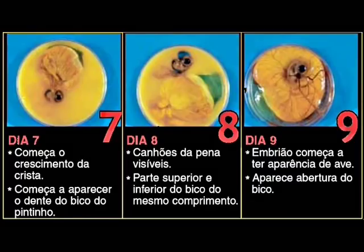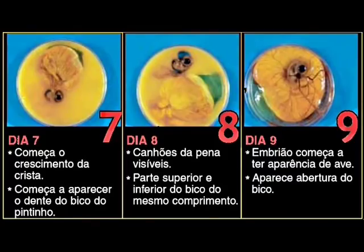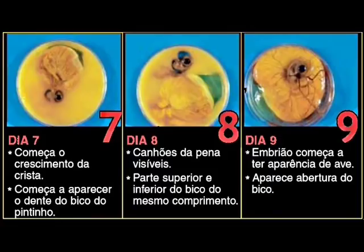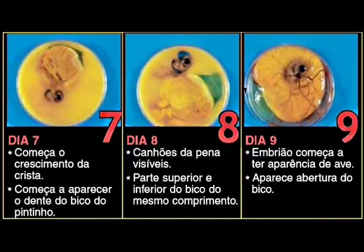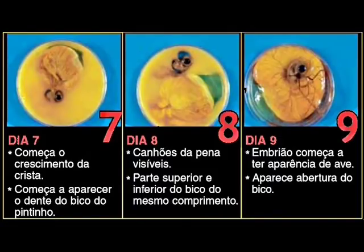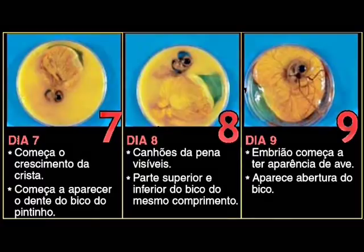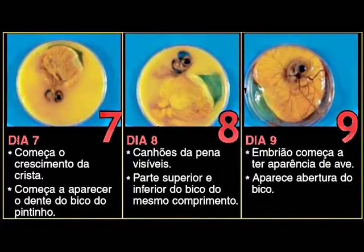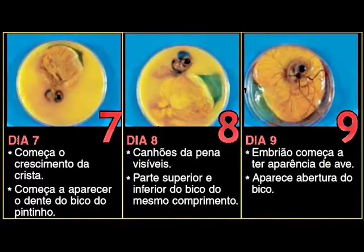Começa a aparecer o dente do bico do pintinho. Caiões das penas visíveis. Parte superior e inferior do bico do mesmo comprimento. O embrião começa a ter aparência de ave. Aparece a abertura do bico.